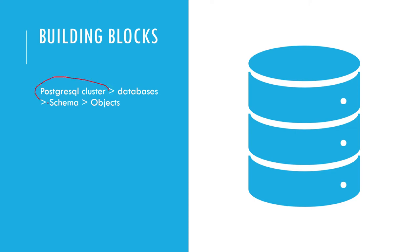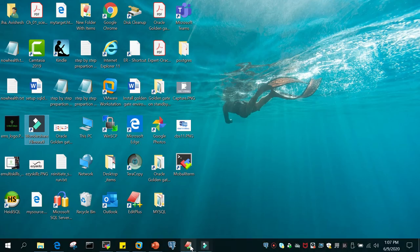The building blocks of PostgreSQL are: a PostgreSQL cluster — one installation, say PostgreSQL 12. By default there is one instance, but you can create more. Each instance has its own set of background processes and memory area. Inside each instance you can create different databases, and each database has containers called schemas, which in turn contain different types of objects. The hierarchy is: cluster → instance → databases → schemas → objects — just like folders.